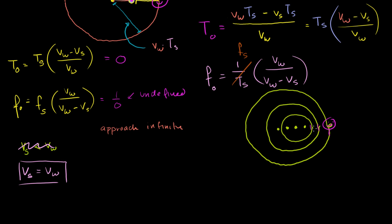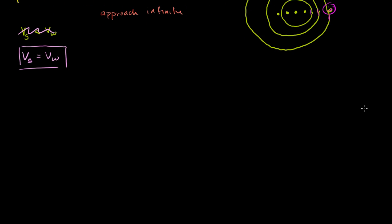Now think about what happens when the source is moving at exactly the speed of the wave. The source is here now, about to release a new crest. One period ago it was back there and released a cycle then. Since the wave travels at the same velocity as the source, that cycle has only traveled as far as the source itself has traveled — so it's right here at the source's current position. Both the source and the wave it released one period ago arrive at the same spot.